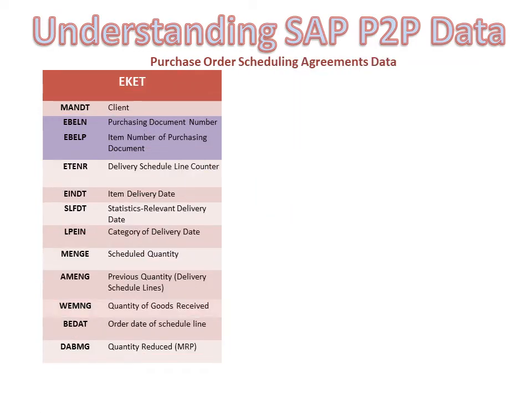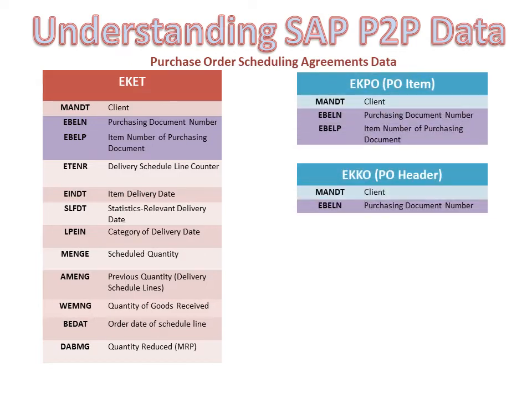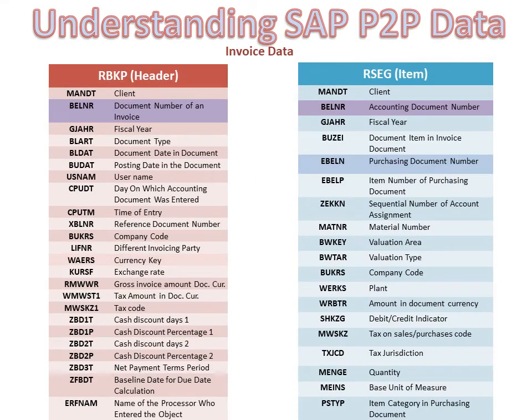Before receiving the goods from the vendor, we create a scheduling agreement between the company and the vendor. This agreement holds the schedule line items which are agreed upon by both parties, stored in the schedule line agreement table namely EKET. This holds the different delivery dates and quantities at line item level agreed upon in the scheduling agreement for this particular material in the PO. This table is linked with the PO item and header tables via the purchase order number EBELN and the item number EBELP, and is also used for determining the open or closed status of a PO.